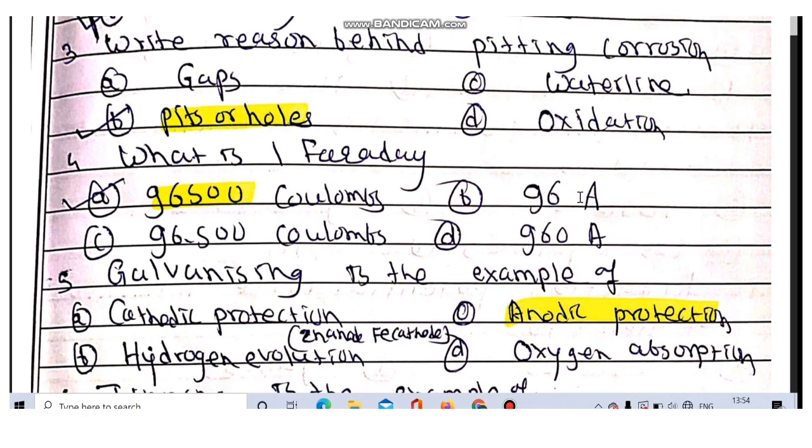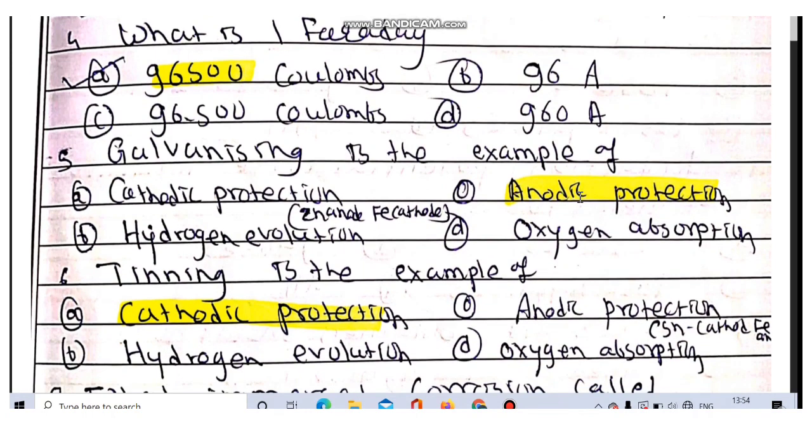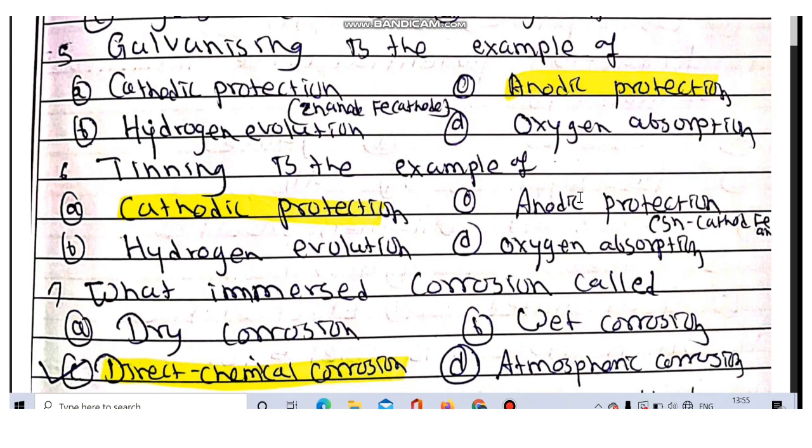What is one Faraday? One Faraday is equal to 96,500 coulombs. Galvanizing is an example of anodic protection because in galvanizing, zinc is coated on iron and it protects the iron. Tinning is the example of cathodic protection.